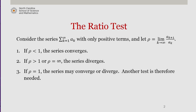If rho is less than 1, the series converges. If rho is greater than 1 or infinity, the series diverges. And if rho is equal to 1, the series may converge or diverge, but another test is needed.